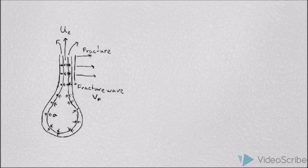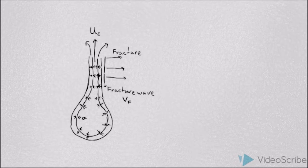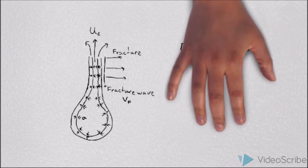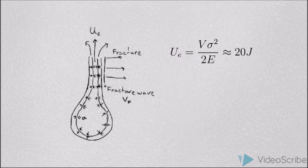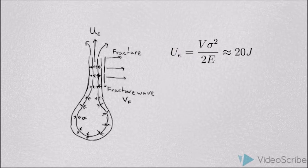To estimate this strain energy and assuming that the drop is spherical with a 1cm radius, we recall the formula volume times the stress squared over 2E, which for values measured at the laboratories, results in 20 joules.